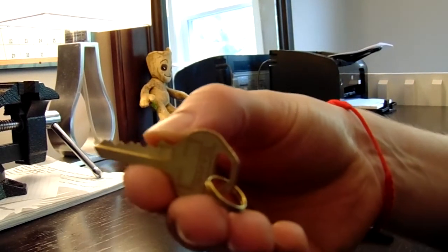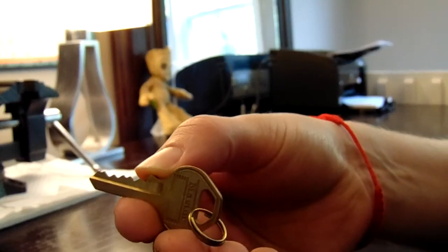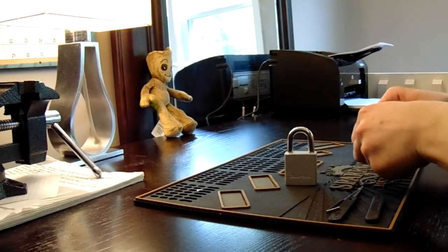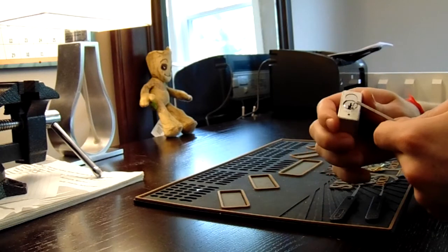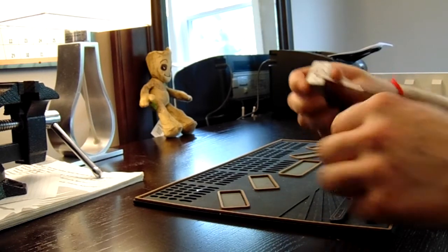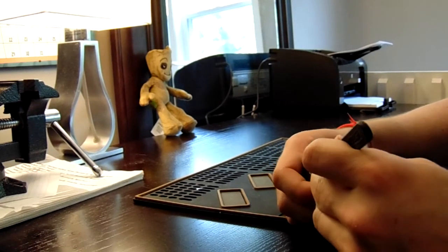Here's a shot of the key. Now I'm going to first start off with the bottom of the keyway tension and a standard hook in 25 thousandths and I'm going to try to single pin pick it. This is also a dead core lock.